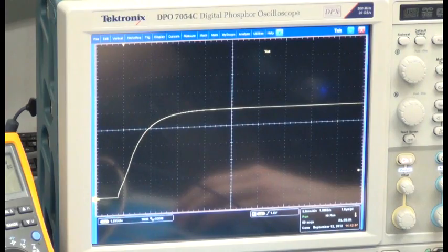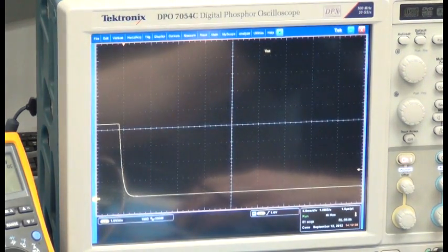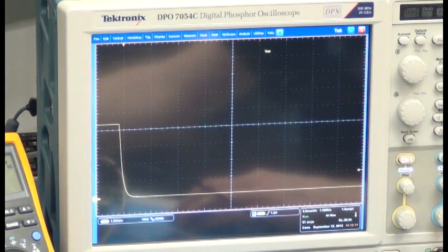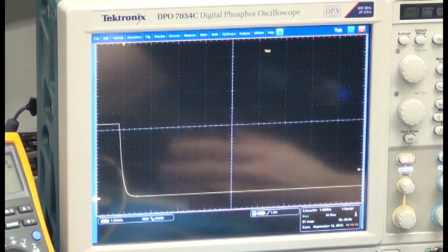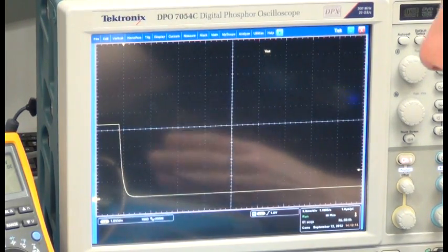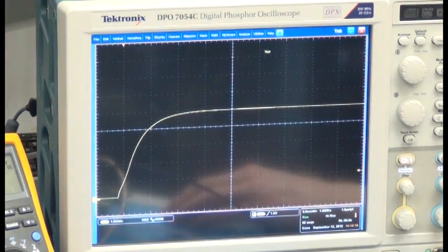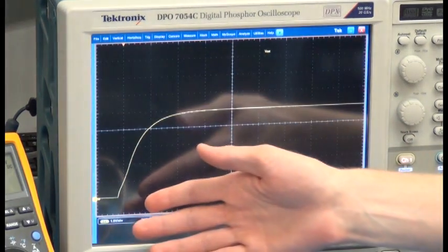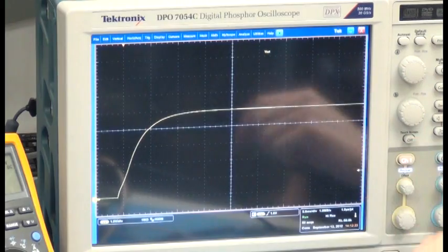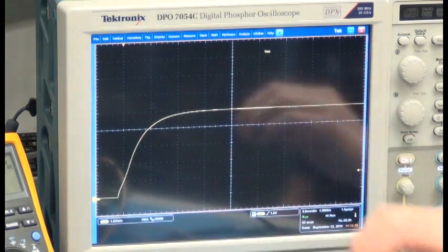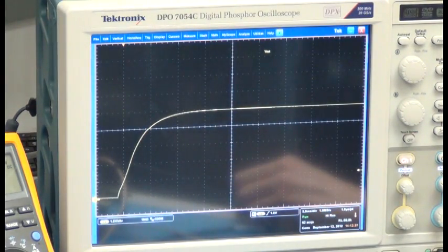Now, I will turn on the electronic load into a constant resistance mode, and we're going to turn on into a full load resistive load. Here again, we see a nice controlled soft start waveform with Vout rising in a controlled manner with no overshoot.